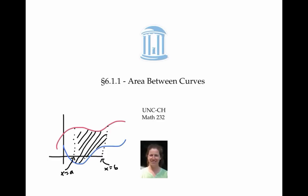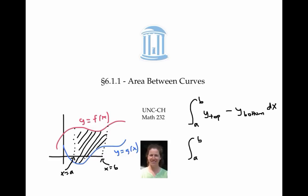In this video, we saw that the area between two curves in between the x values of a and b can be given by the integral from a to b of the top y values minus the bottom y values dx, where the top y values and bottom y values are functions of x. More specifically, if the top curve is given by y equals f of x and the bottom curve is y equals g of x, then this integral is the integral from a to b of f of x minus g of x dx.